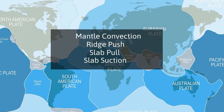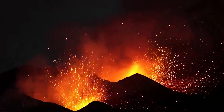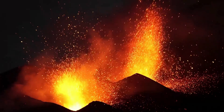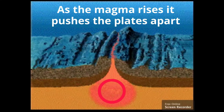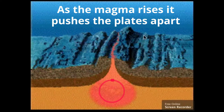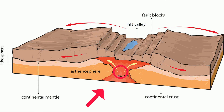The core of the Earth is extremely hot, and it's so hot it turns rock into liquid called magma. The hottest magma rises upward, and as this magma reaches the surface it cools and sinks back down. This creates a convection current.